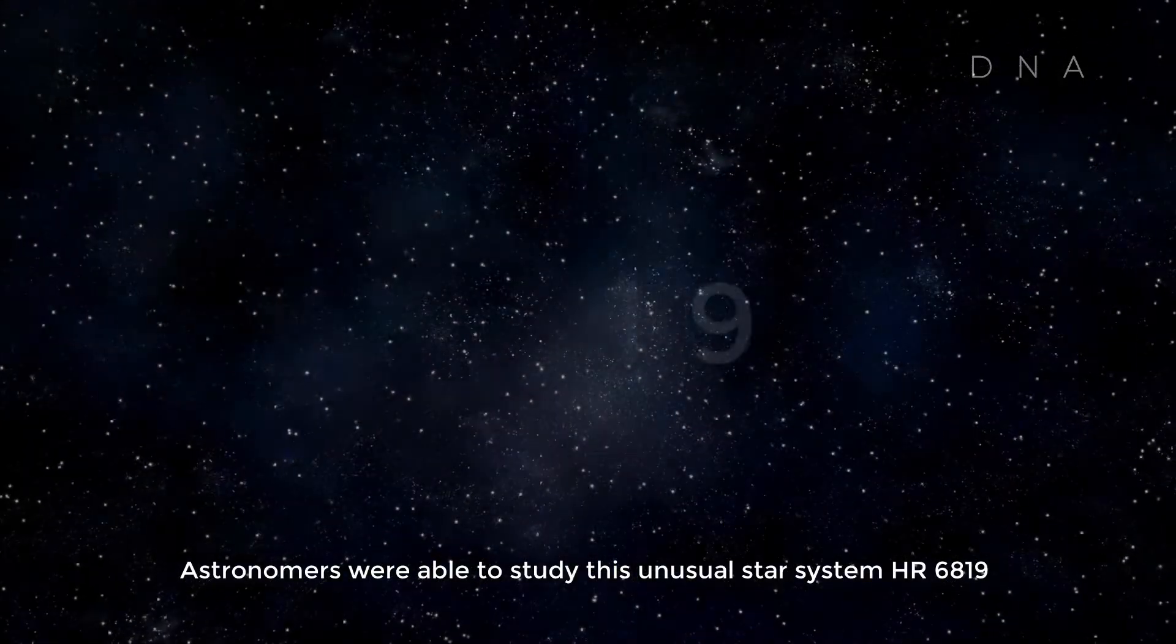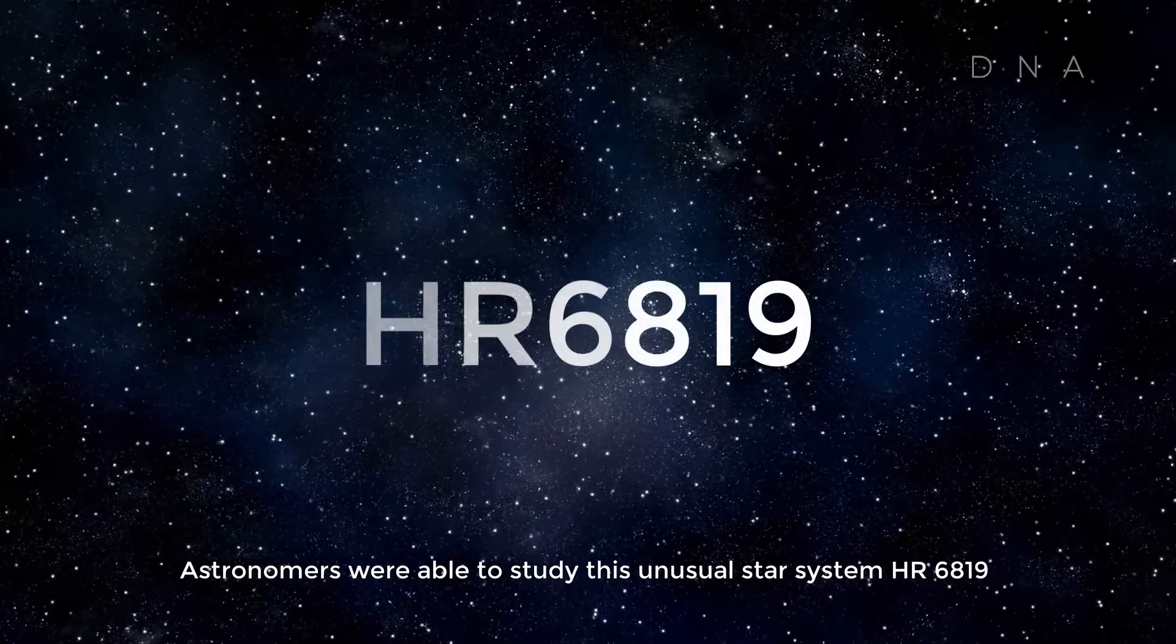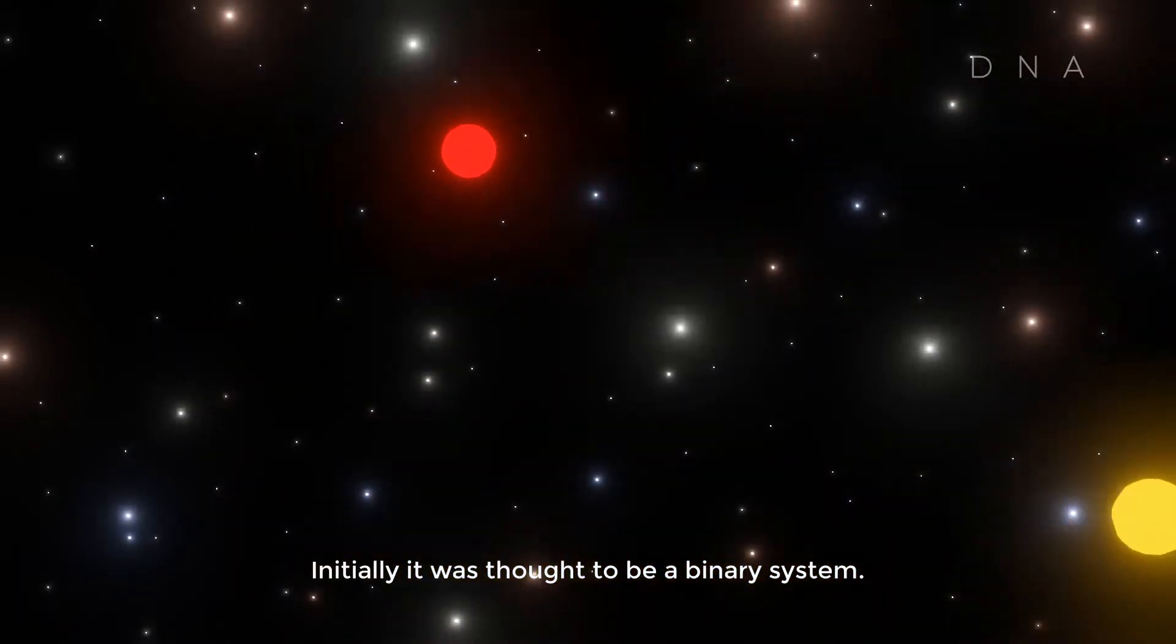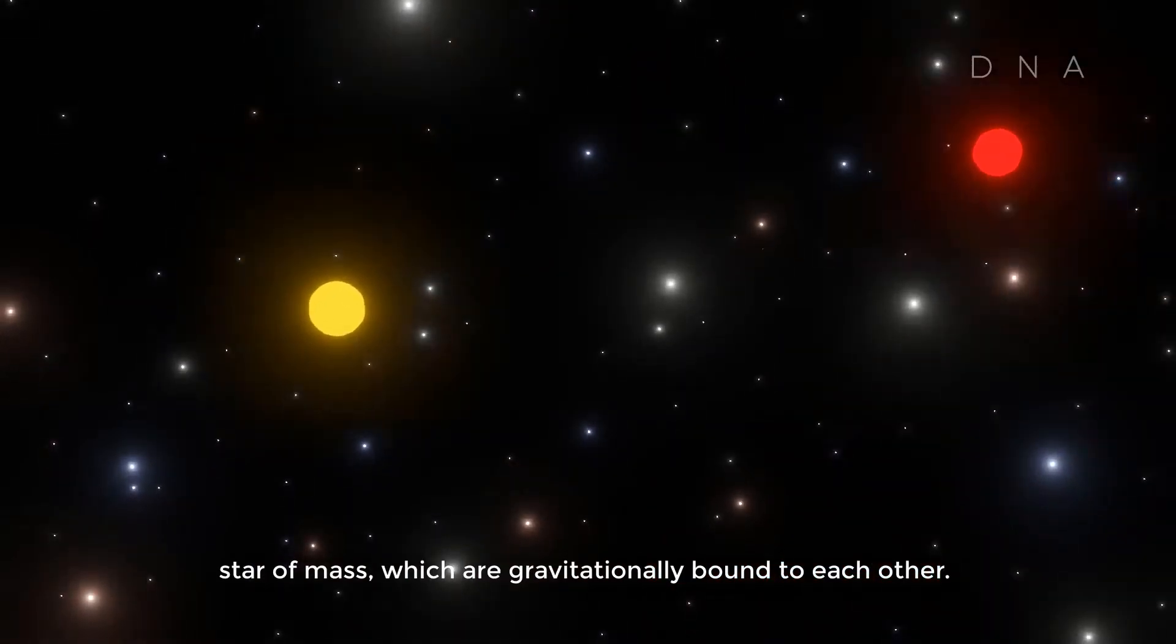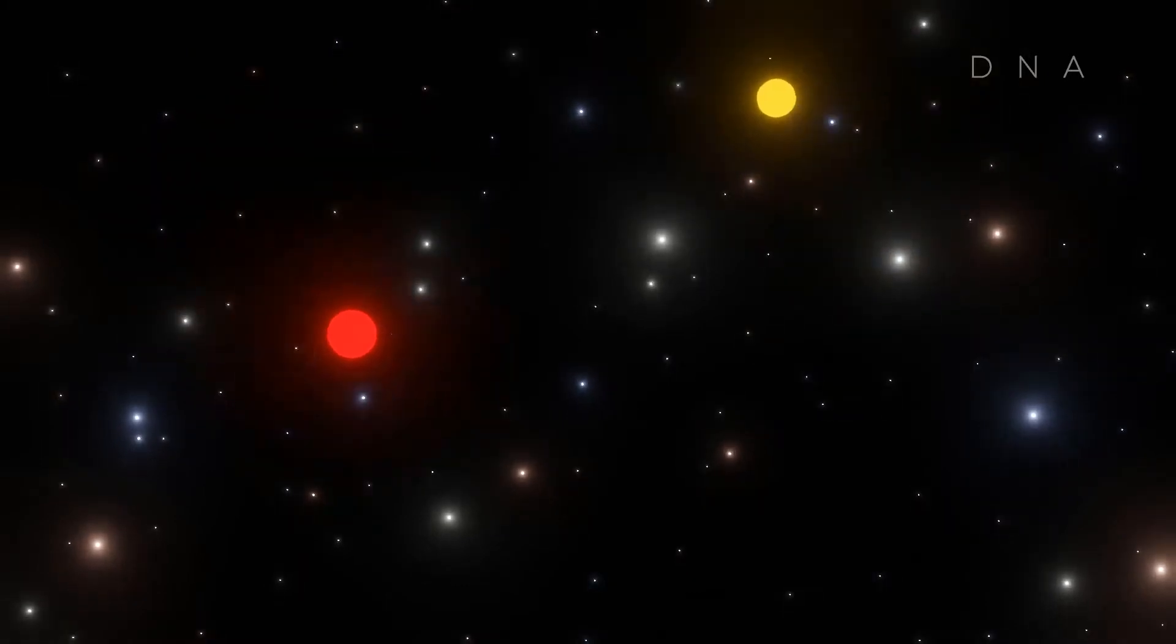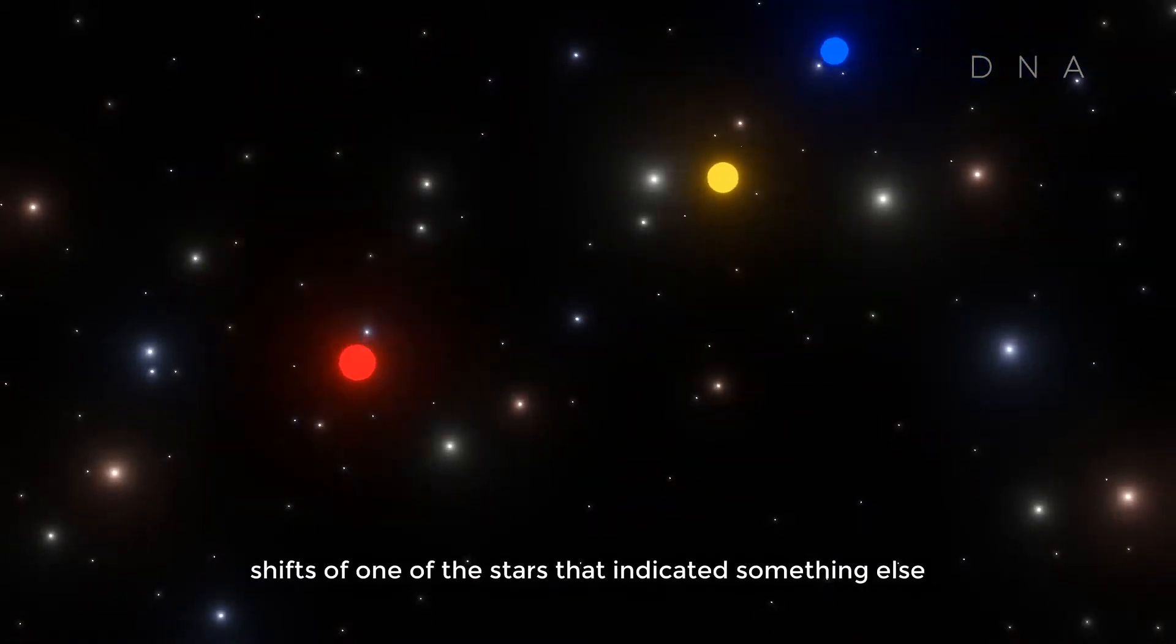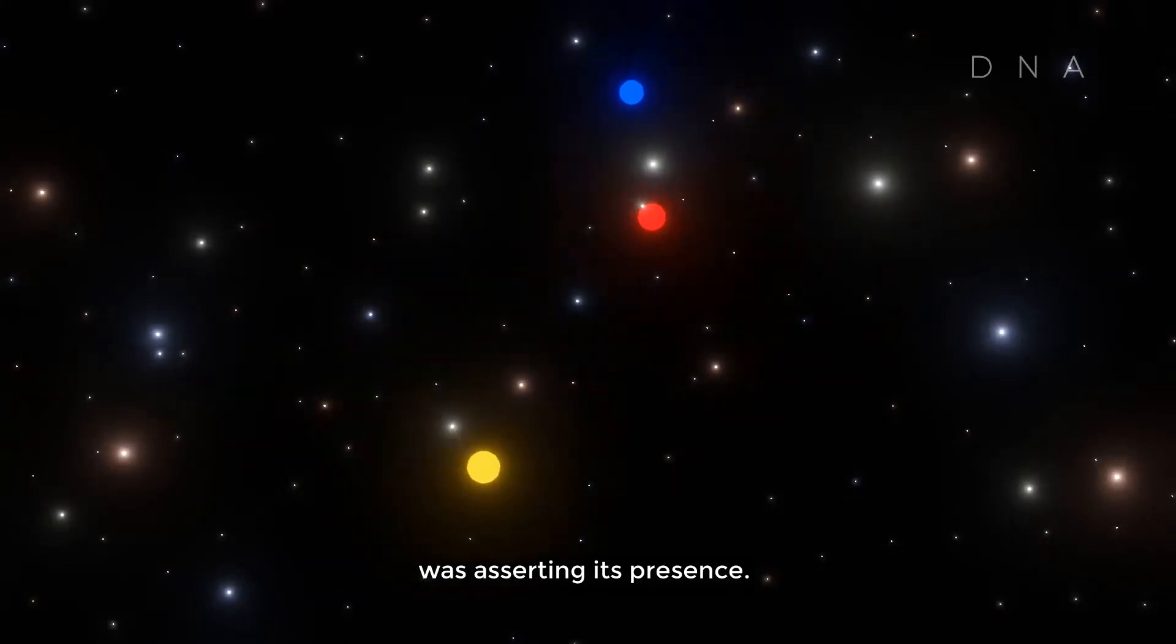Astronomers were able to study this unusual star system HR 6819 using a 2.2 meter telescope. Initially, it was thought to be a binary system. Binary systems are two stars orbiting around a common center of mass which are gravitationally bound to each other. But with HR 6819, there was an extra wobble in the periodic light shifts of one of the stars that indicated something else was asserting its presence.